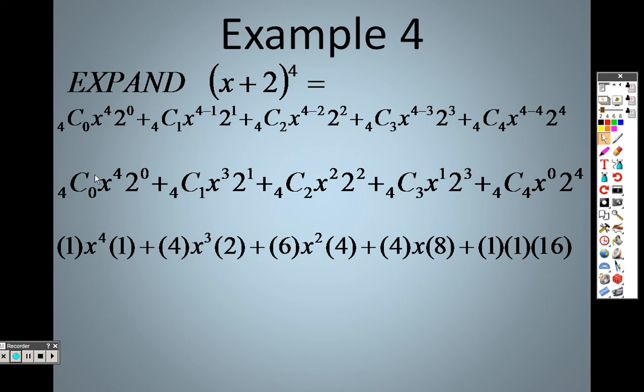So when you're doing this, just so you understand where everything's coming from, notice how it goes 4, 3, 2, 1, 0 with the first term. And the second term, it goes 0, 1, 2, 3, 4. That's where we're getting these numbers from.